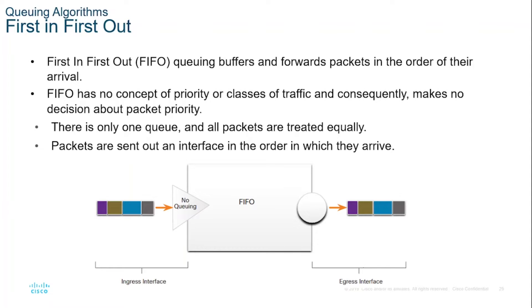Although some traffic may be more important or time sensitive based on the priority classification, notice that the traffic is sent out in the order it is received. As you can see, the original color arrangement from the ingress interface is the same on the egress interface, meaning there is no priority of transmission. When FIFO has issues, important or time-sensitive traffic can be dropped when there is congestion on the router or switch interface.